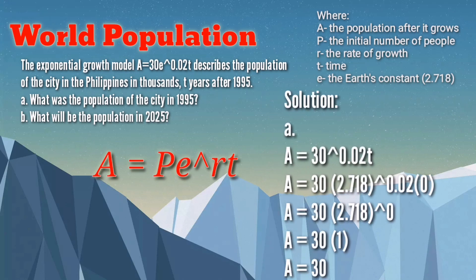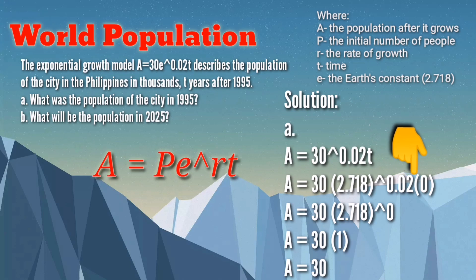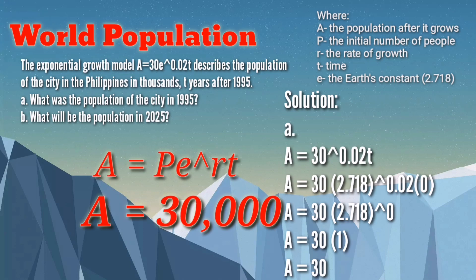For the first question — what was the population in 1995? — since the model describes the population T years after 1995, we set T equals 0. Substituting: A equals 30 times 2.718 raised to 0.02 times 0. Processing the exponent: 0.02 times 0 equals 0, and any number raised to 0 equals 1. Therefore, 30 times 1 equals 30, meaning 30,000 was the population of the city in 1995. The population is in thousands as stated in the problem.